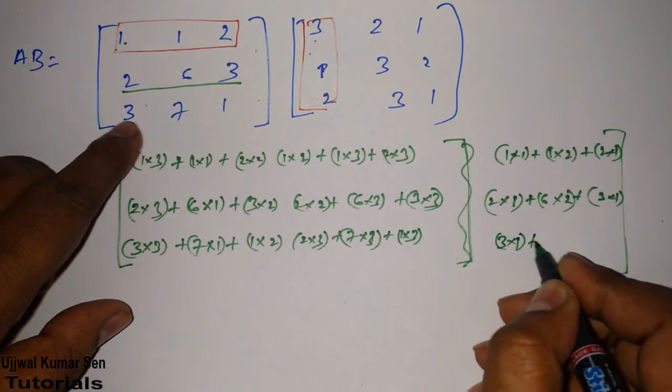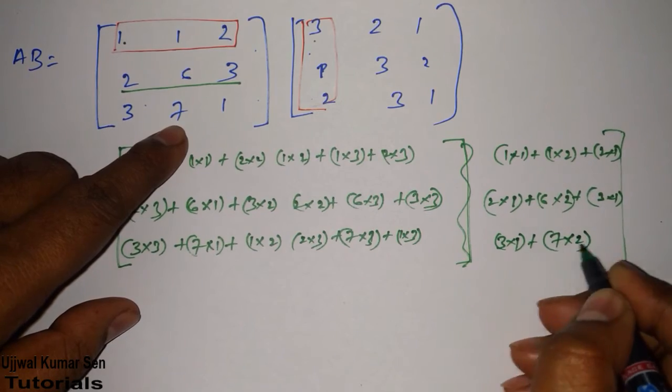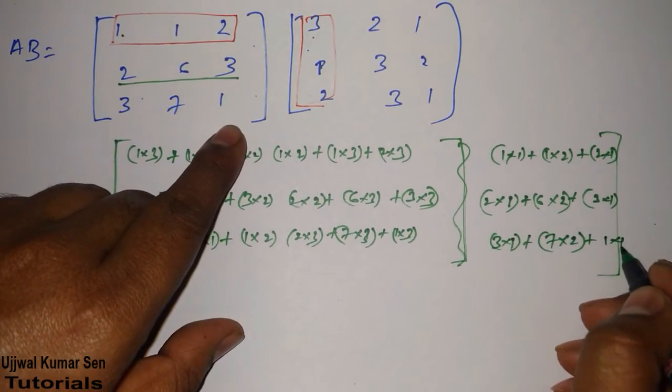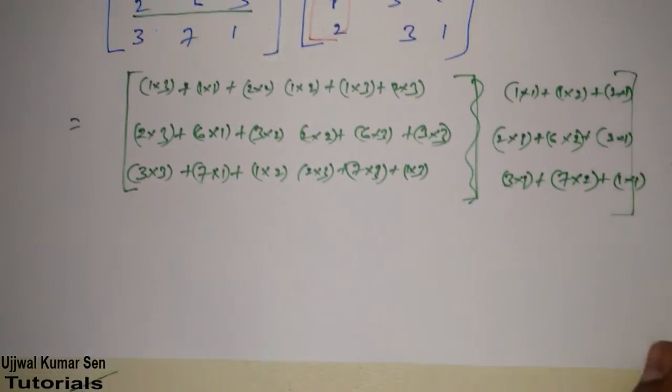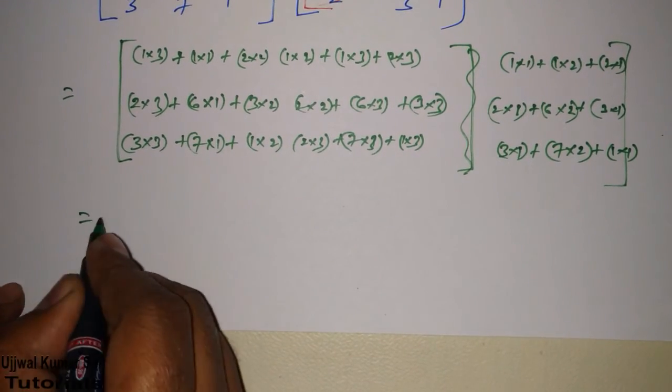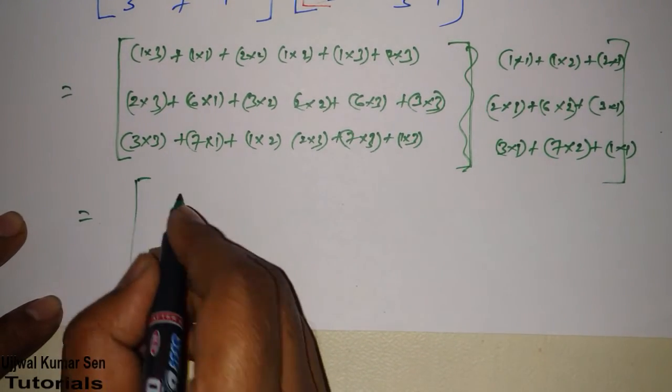Next, 3 multiple 1, 7 multiple 2, plus 1 multiple 1. Now, we will do simple calculation, and then we will get that result, right?